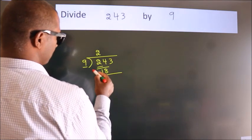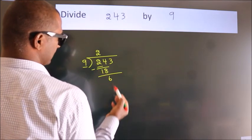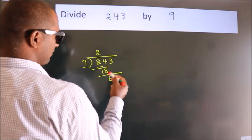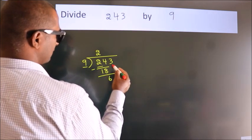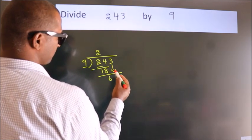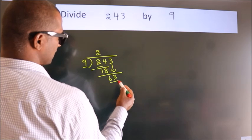Now, we should subtract. We get 6. After this, bring down the beside number. So, 3 down. So, 63.